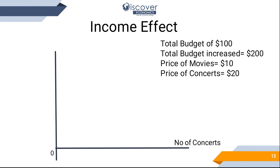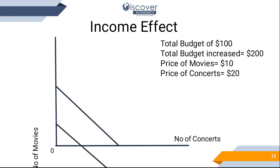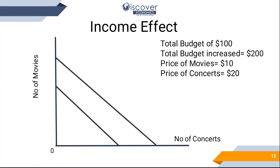Now, the income effect: if your income increases from $100 to $200, then when you had $100 you were enjoying 10 movies and 5 concerts, but with $200 you can enjoy 20 movies and 10 concerts. Your overall consumption capacity has increased, which is why you enjoy more.